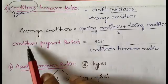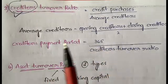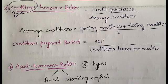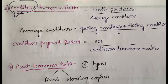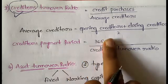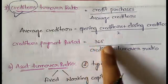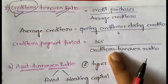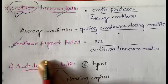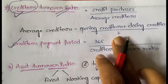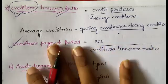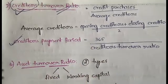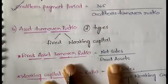Once you have the creditors turnover ratio, you need to find the creditors payment period — a measure of how much time it takes to make or receive payment. Creditors payment period is calculated as 365 divided by the creditors turnover ratio. Substituting the creditors turnover ratio gives you the creditors payment period.